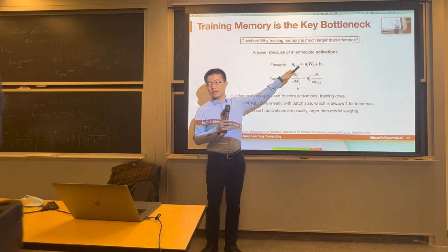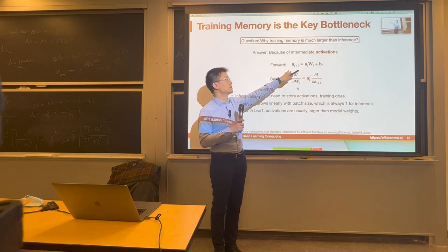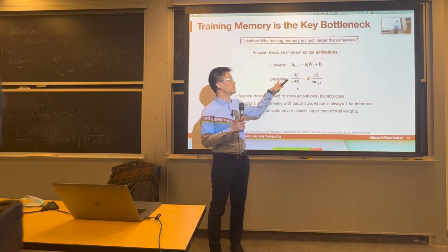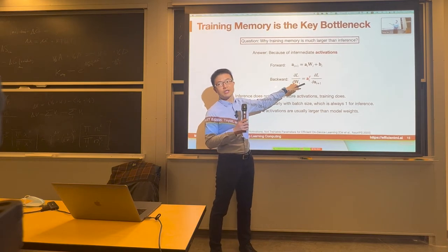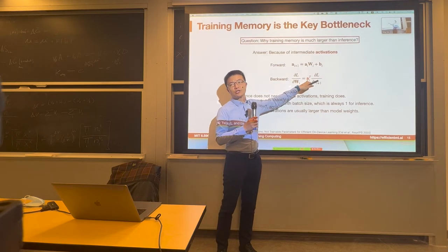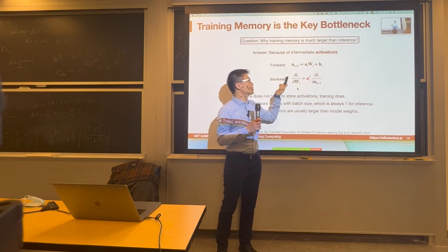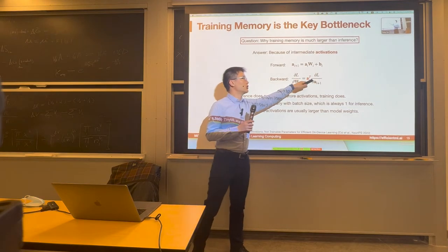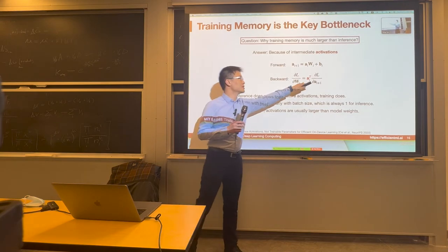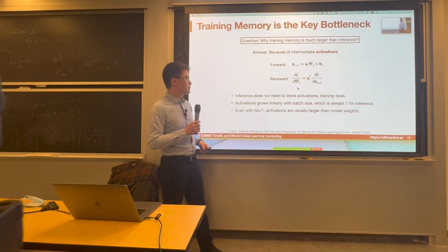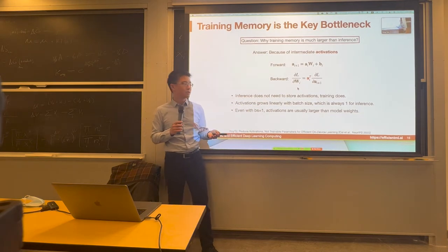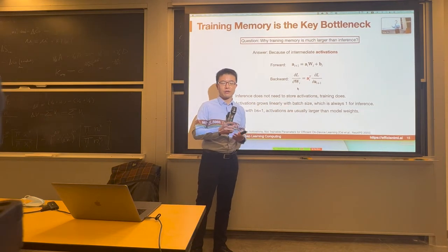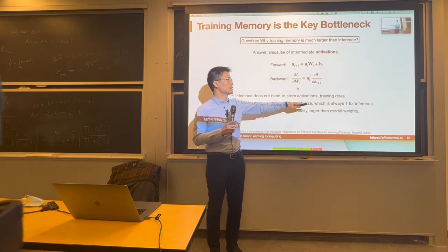Recall the equation for a simple linear layer: the activation is the last layer's activation times the weight, plus the bias. To calculate the gradient with respect to the weight in the backward phase, you need the transpose of the input activation — you have to store those activations to calculate the gradient with respect to the weight. That's why we need to store intermediate activations during backpropagation, and this is the bottleneck for training. Inference does not need to store any activation except the current layer, but training does. Activations scale linearly with batch size; if batch size is 8, we have to store 8 copies.